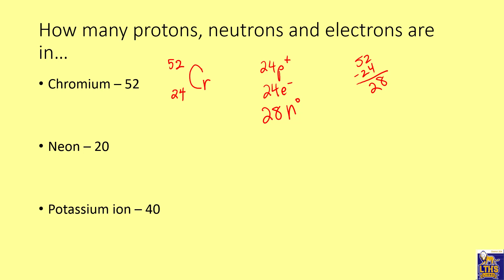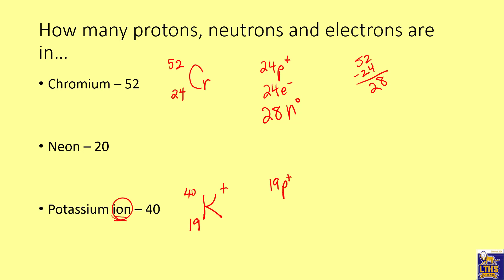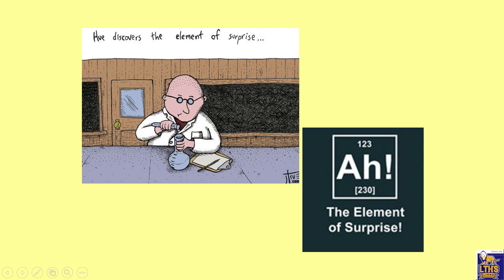For potassium ion: the symbol is K, mass number 40 goes on top, atomic number 19 goes on the bottom. Potassium is a plus-one ion, so it's positively charged. There are 19 protons. Because of the plus-one charge, there is one fewer electron than protons, so 18 electrons. Neutrons equal 40 minus 19, which is 21 neutrons.